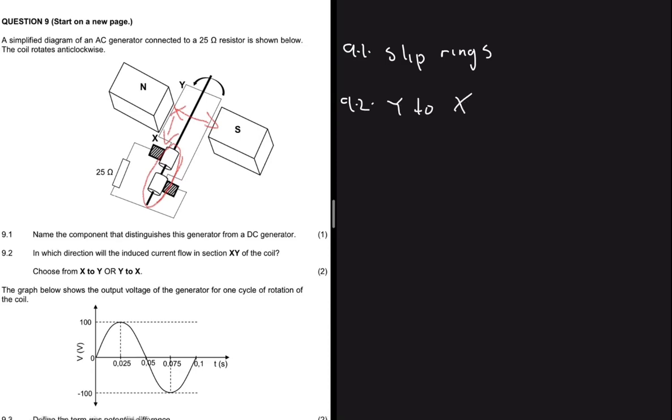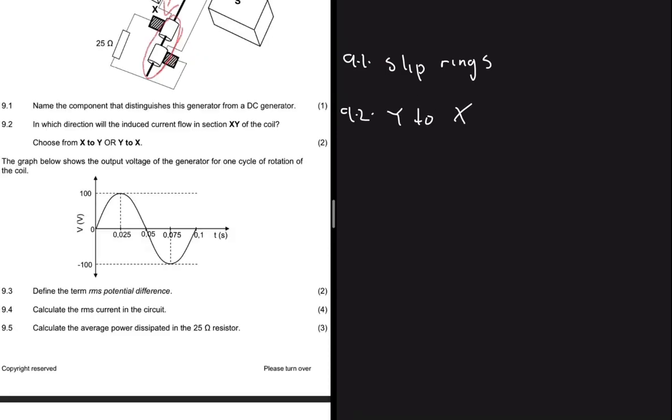The diagram below shows the output voltage of the generator for one cycle of rotation of the coil. We have the voltage on the y-axis and the time on the x-axis. Question 9.3 says define the term RMS potential difference.